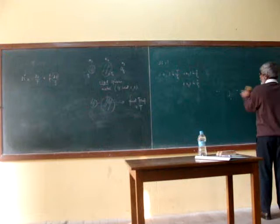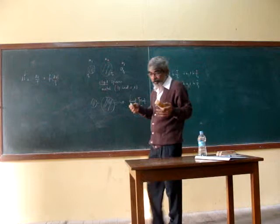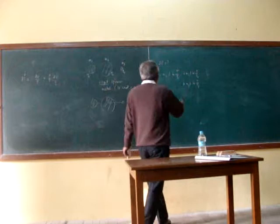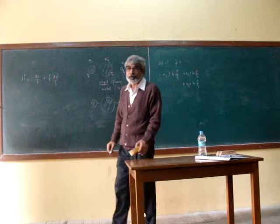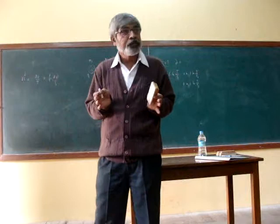Now what does the second law say? It says that delta S will be greater than or equal to zero. And since our whole system is isolated, naturally for that the second law also says that delta S must be greater than or equal to zero. So we see that this quantity has to be greater than or equal to zero.